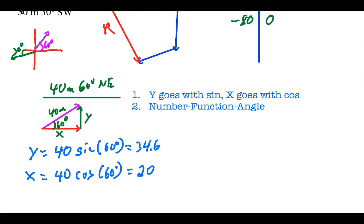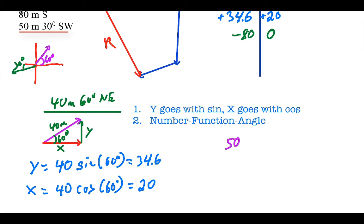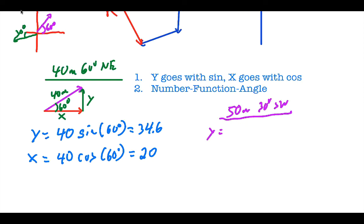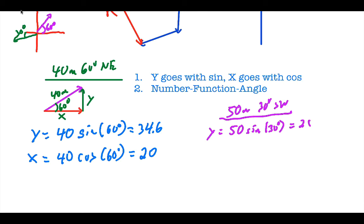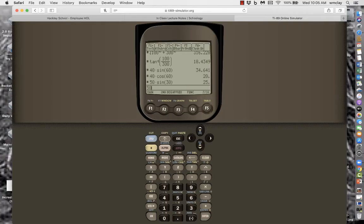So now let's apply this idea for the other tricky one, which is 50 meters 30 degrees southwest. The y component, y goes with sine, number 50, function sine, 30 is the angle. 50, second, sine, 30 degrees, which is 25. The x component, 50, cosine, 30. X goes with cosine, number function angle. 50, second, cosine, 30 degrees, which gives me 43.3.